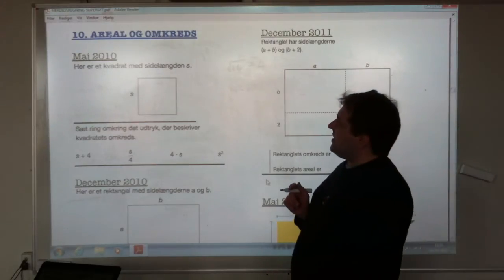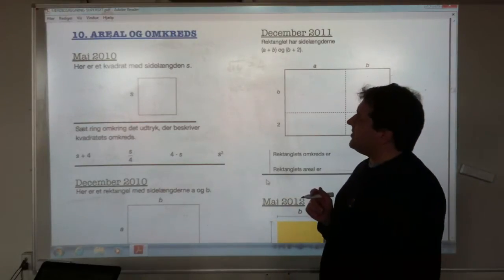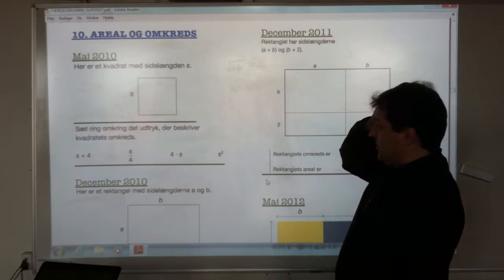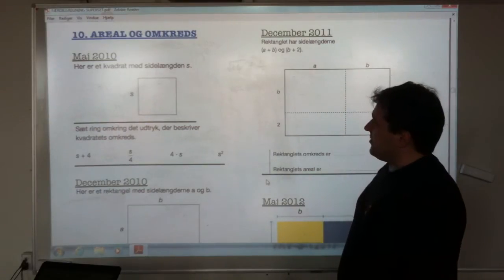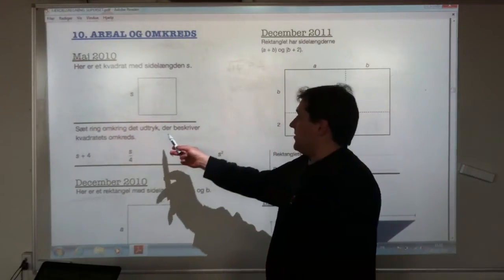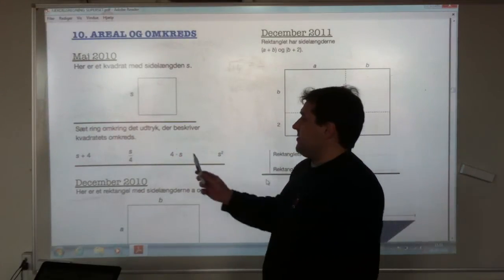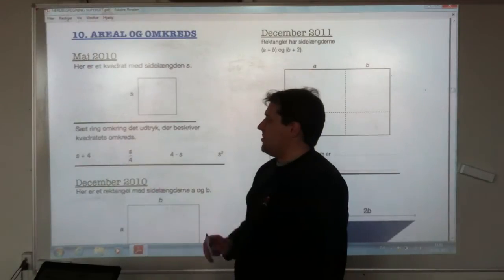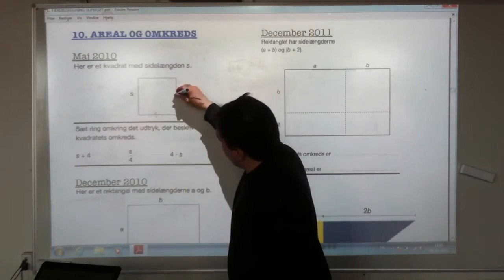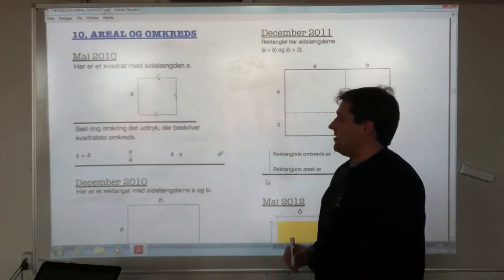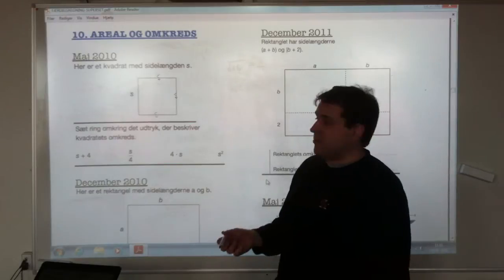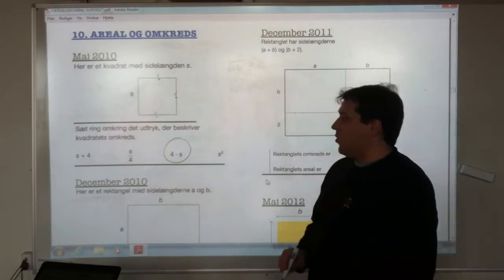Section 10, all about area and perimeter. First question: here is a square with side length s. Put a ring around the expression that describes the square's perimeter. So each of the sides is s, so it's s plus s plus s plus s, or in other words, 4 times s.